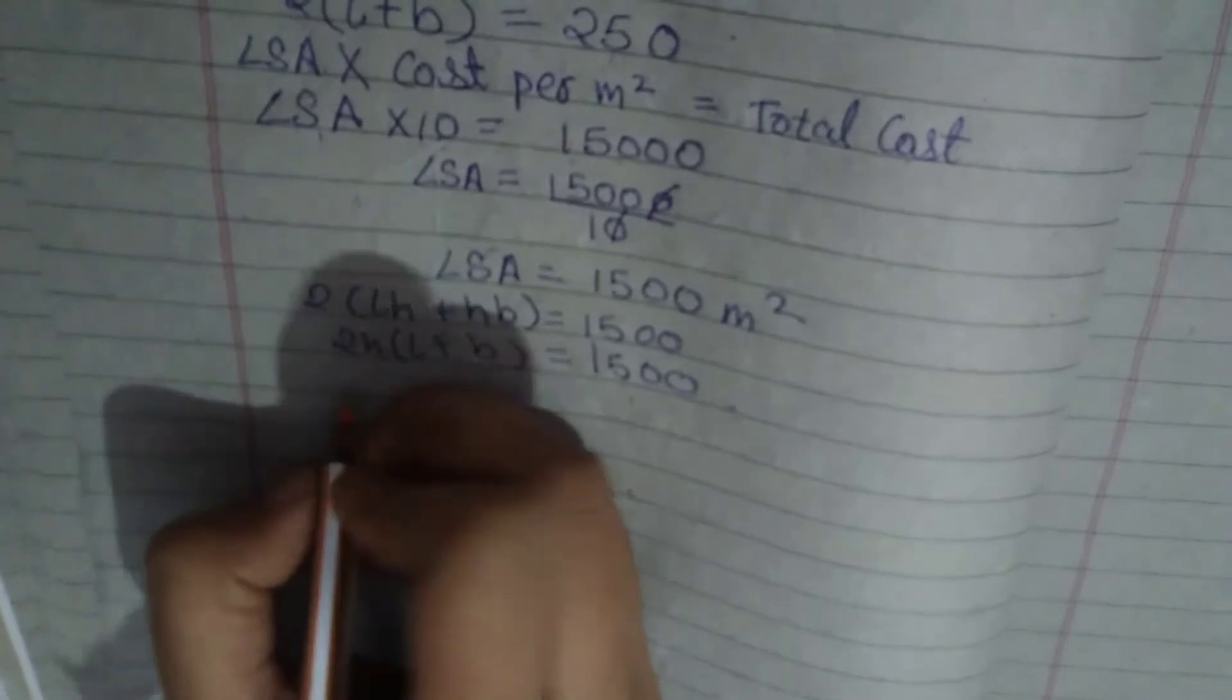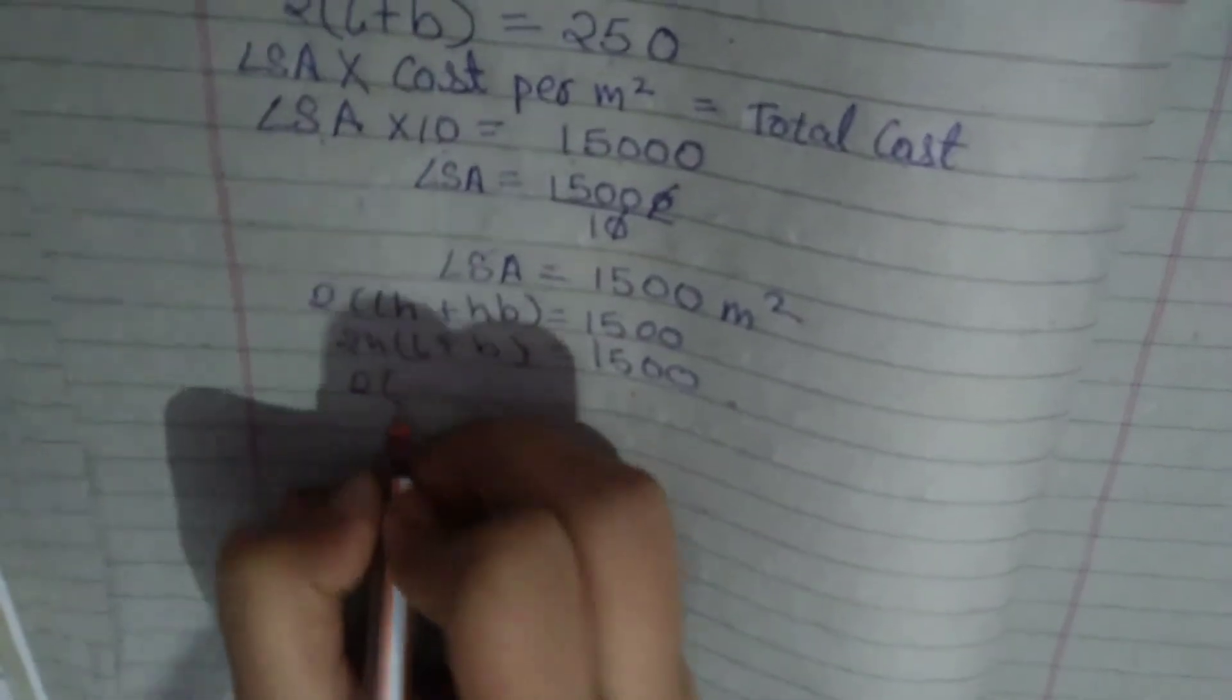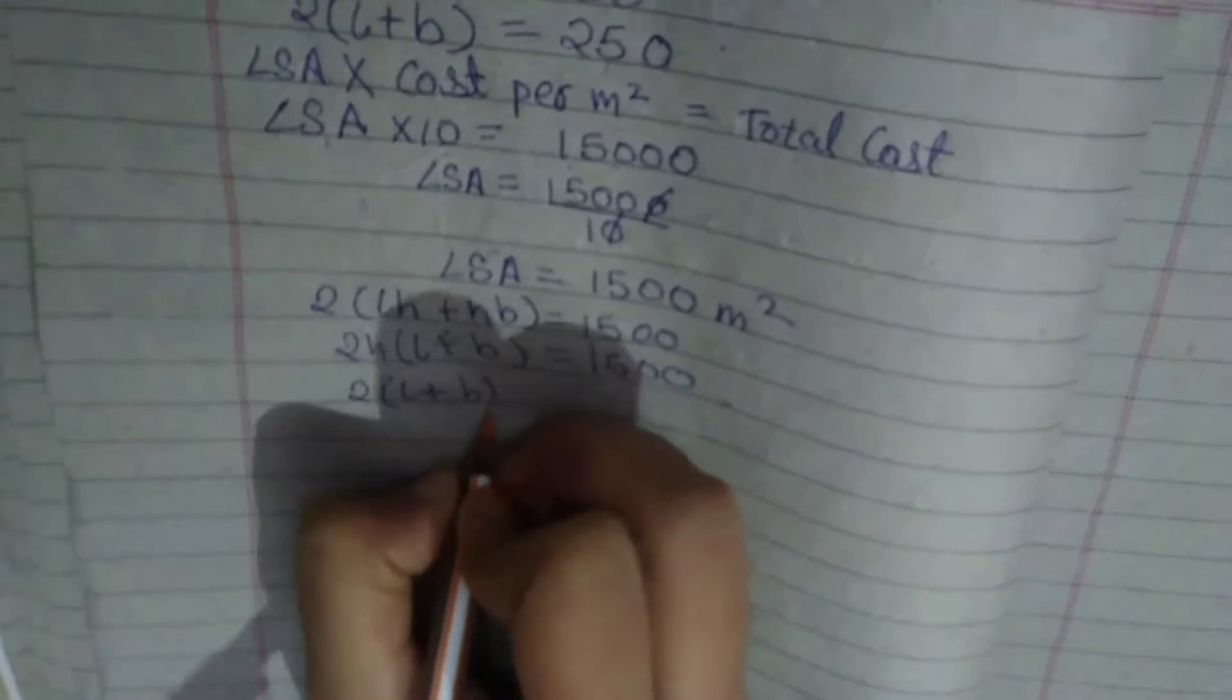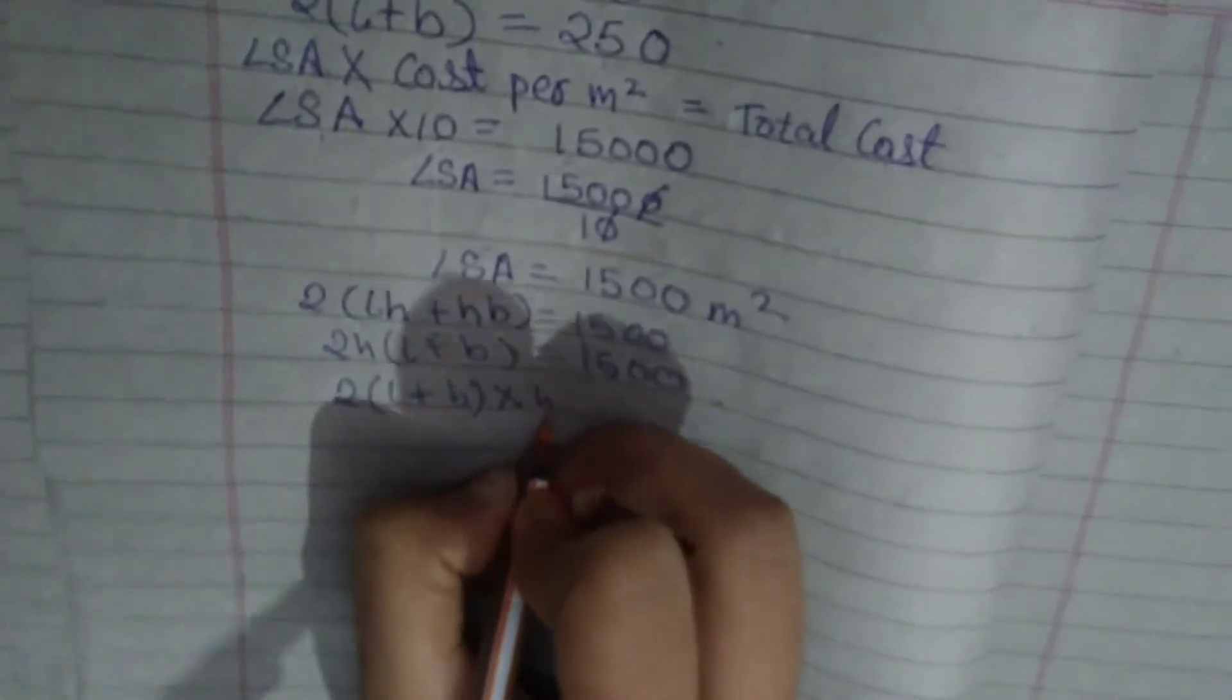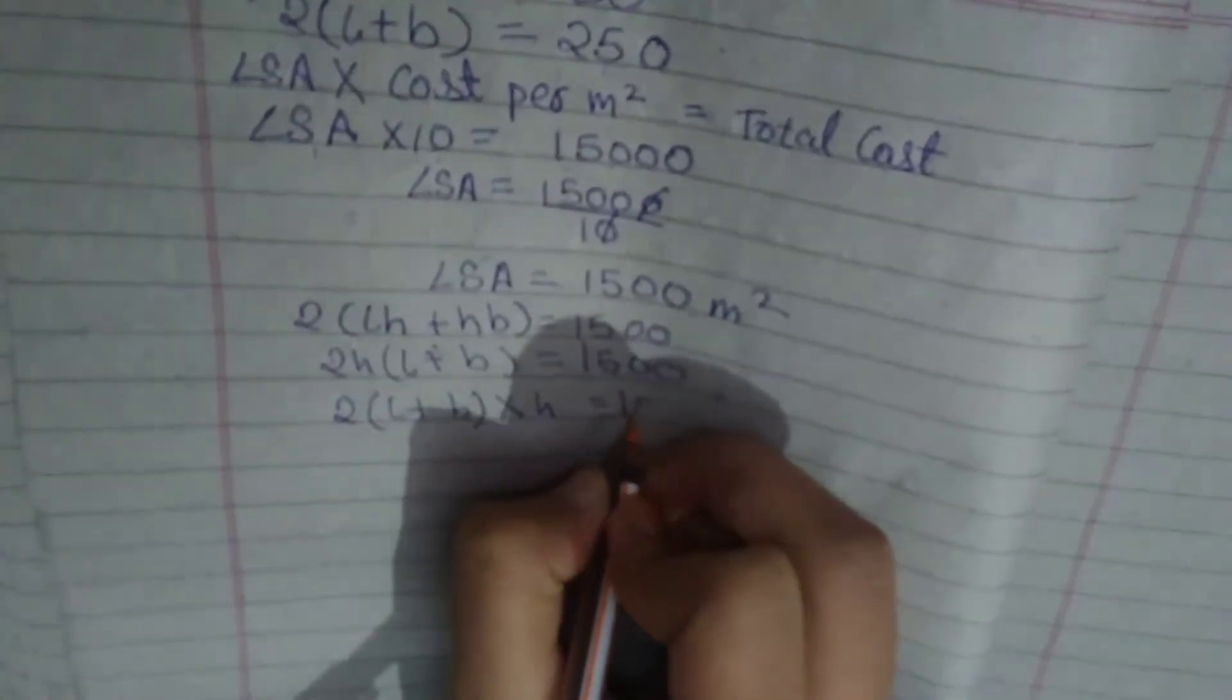Now, we have to write 2 into L plus B into H which is equal to 1500.